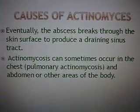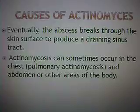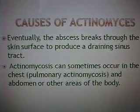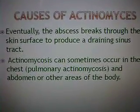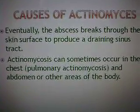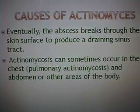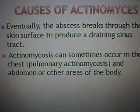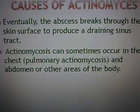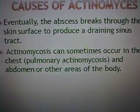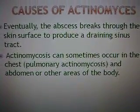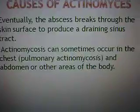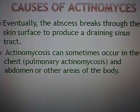Eventually, the abscess breaks through the skin surface, producing the drainage sinus tracts, which is what I showed you in the other picture. Also, actinomycosis can sometimes occur in the chest — this is called pulmonary actinomycosis — and also in the abdominal region. This is usually due to some trauma, which allows the pathogen to become an opportunistic pathogen, so it enters the body's bloodstream and then it causes problems.